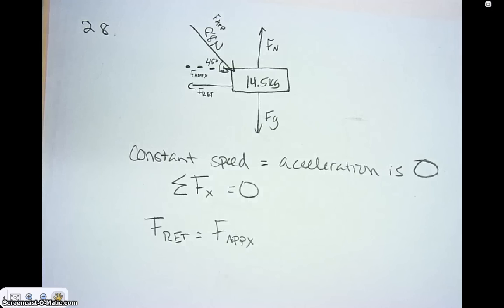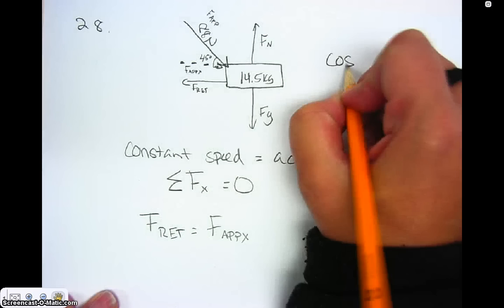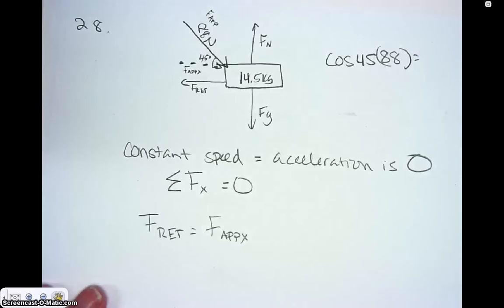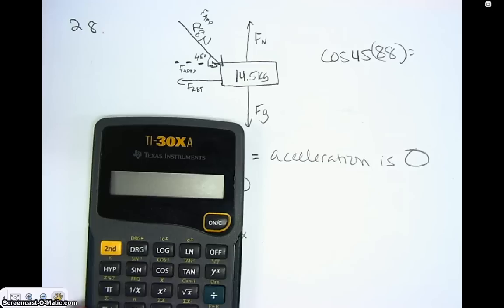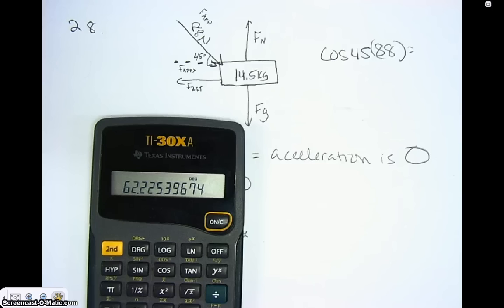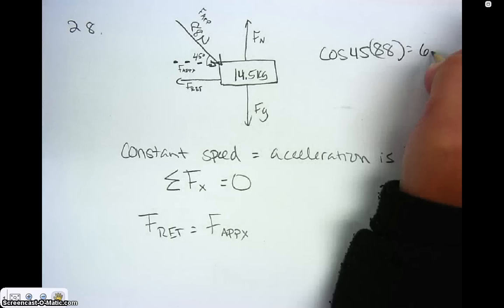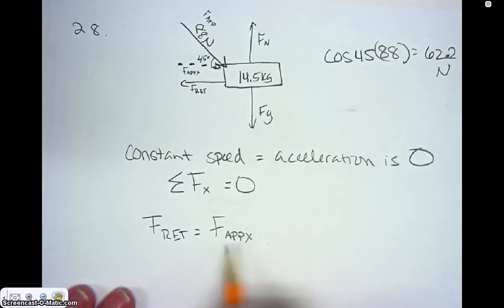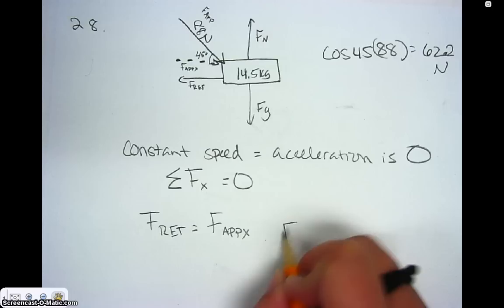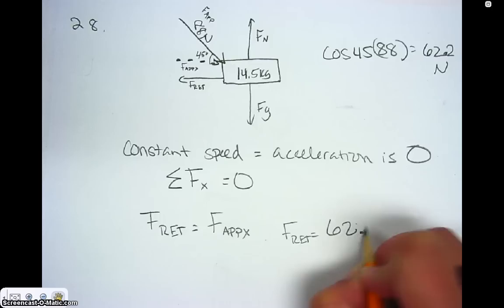All I need to do is find the x-component using cosine. Cosine of 45 times the hypotenuse of 88 newtons gives me the force applied in the x direction. So cosine of 45 times 88 — making sure my calculator is in degrees and not radians — gives me 62.2 newtons. So the retarding force is equal to 62.2 newtons to the left.